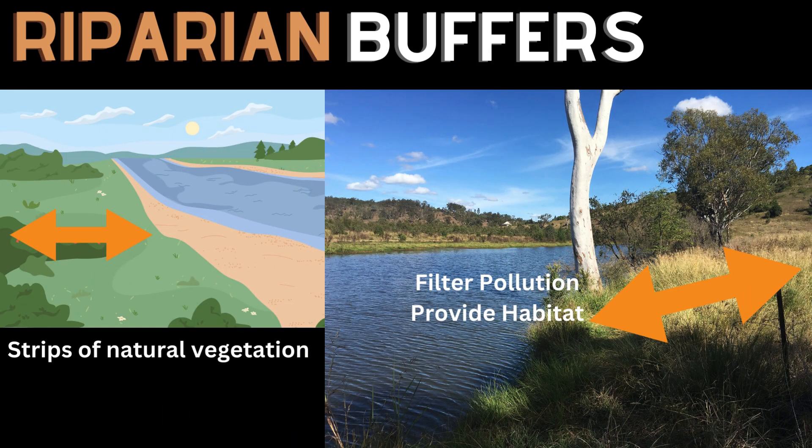Riparian buffers are strips of natural vegetation along river banks. They act as a buffer zone between the river and the surrounding land, helping to filter pollution, reduce erosion, and provide habitat for wildlife.